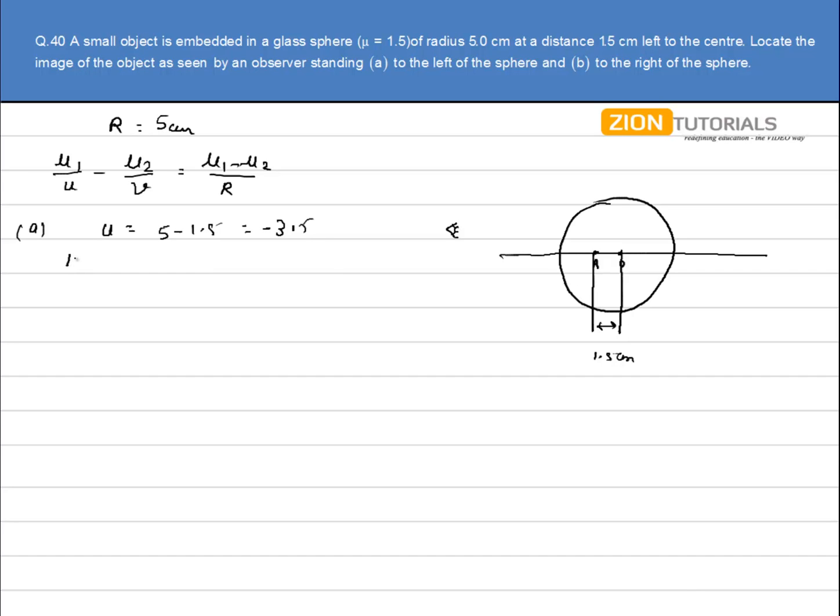So just substitute the value. mu1 is 1.5 over minus 3.5, minus mu2 that is 1 over V, is equal to 1.5 minus 1 over the radius of curvature, which is also negative.